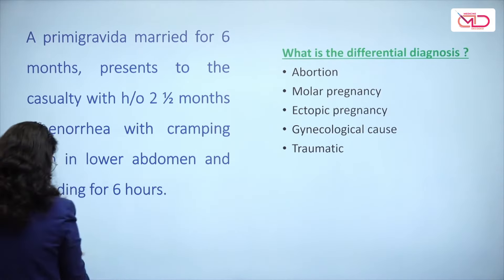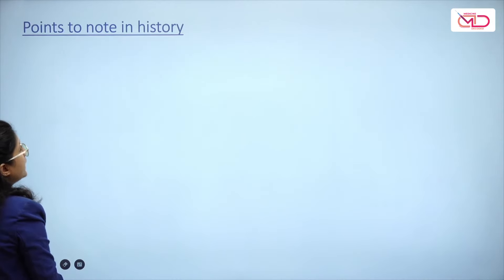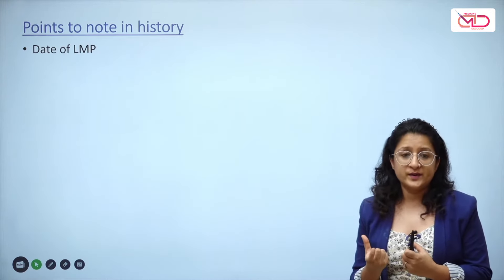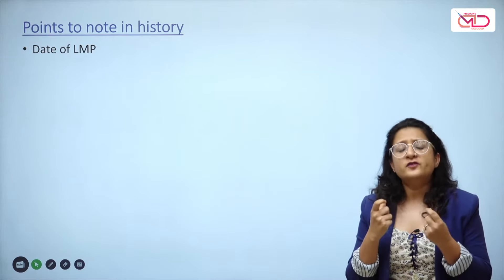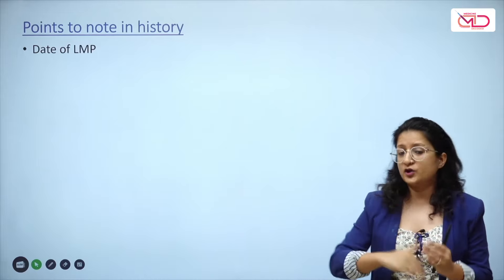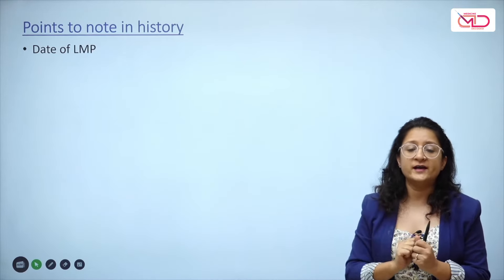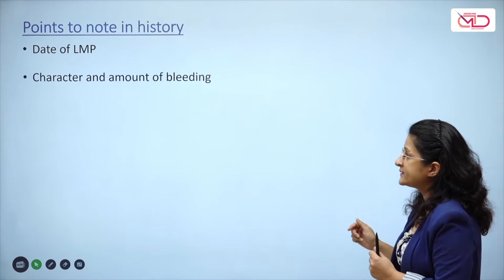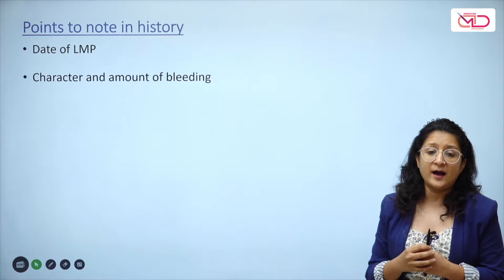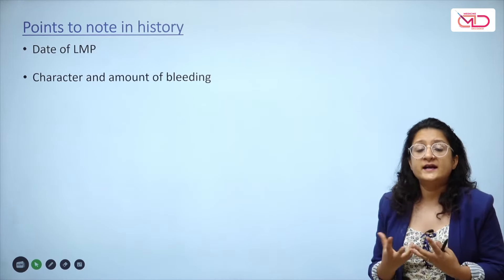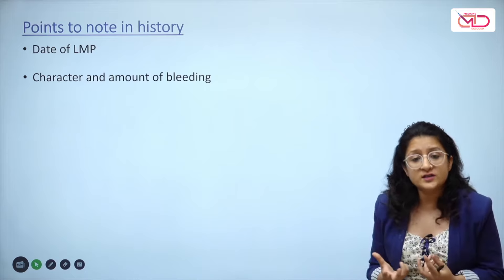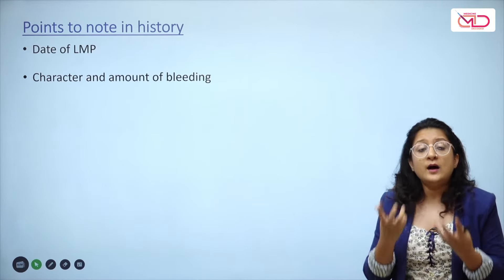After ruling out pregnancy, move on with your history. Key points: date of the last menstrual period, whether cycles have been regular — because you need to calculate the period of gestation in weeks, as your uterine size and differential diagnosis all rely on this. Note the character and amount of bleeding: was it after trauma? Did it develop suddenly? Is it associated with pain? How many pads soaked? Does she pass clots?